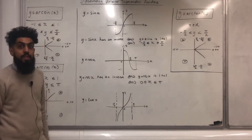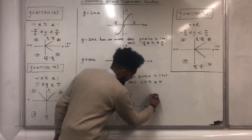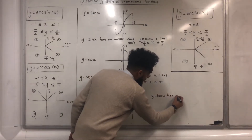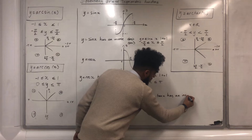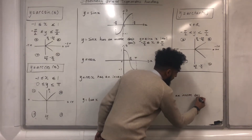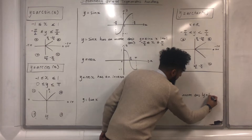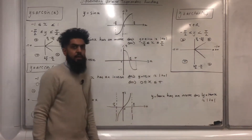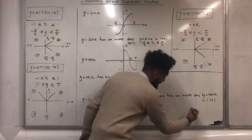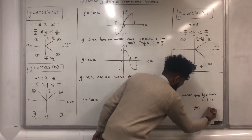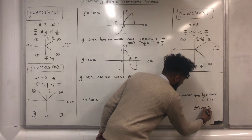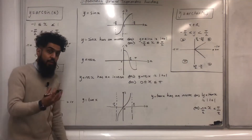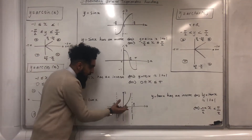Let's look at y equals tan x. Now y equals tan x has an inverse if and only if y equals tan x is one to one, if and only if x is more than minus pi over two but less than pi over two. With this restriction after sketching the graph we can see that the tan x graph is now one to one.